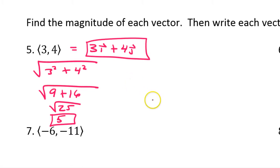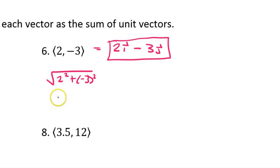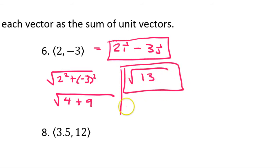Looking at number 6. In unit vector form, this is going to be 2i minus 3j. And then, for the magnitude, we will do the square root of 2 squared plus negative 3 squared. That's going to equal the square root of 4 plus 9. That's going to equal the square root of 13. So that's it.